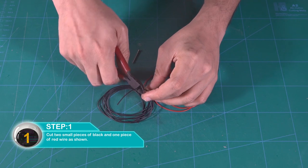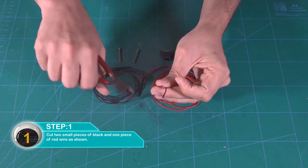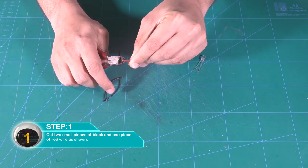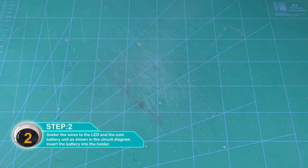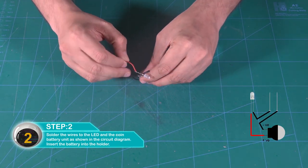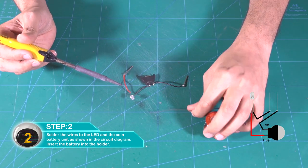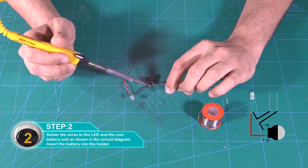Cut two small pieces of black and one piece of red wire as shown. Solder the wires to the LED and the coin battery unit as shown in the circuit diagram. Insert the battery into the holder and check the circuit.